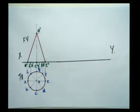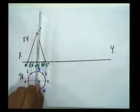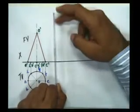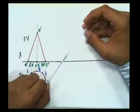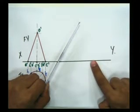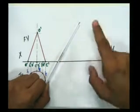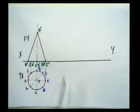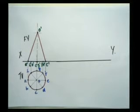The axis is inclined at 45 degrees. Imagine this scale to be the axis. I'm taking it and keeping it here, then turning it 45 degrees such that it makes 45 degrees with respect to line XY. Once that is done, I can draw my cone and have the position of the cone in this condition, then draw the top view accordingly.